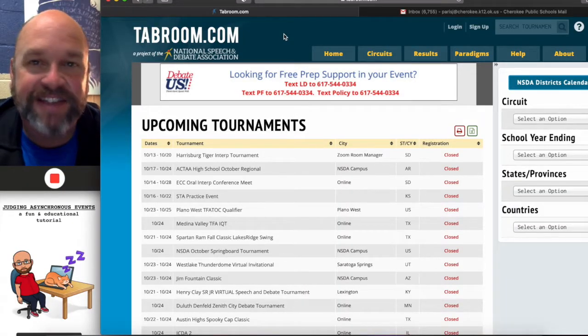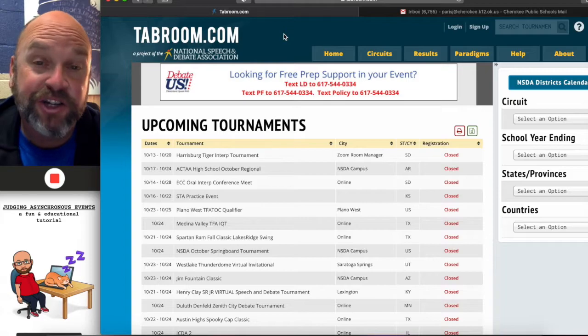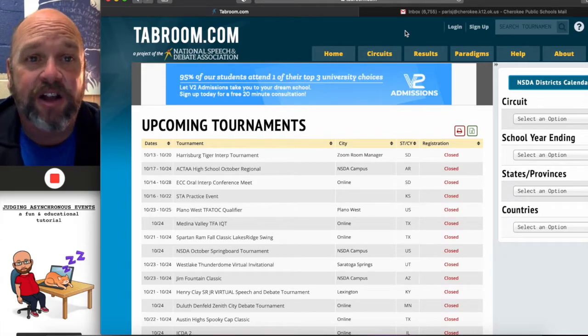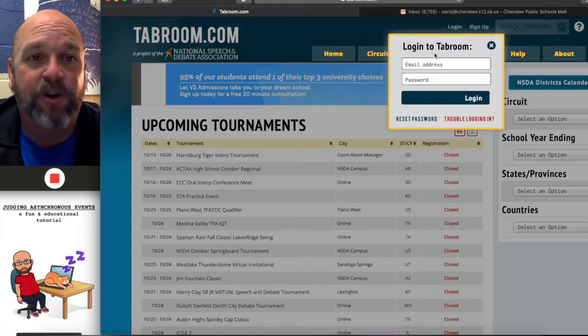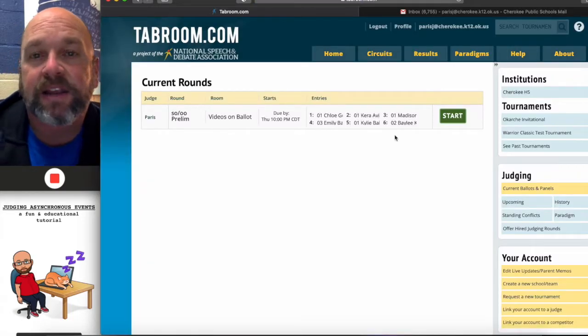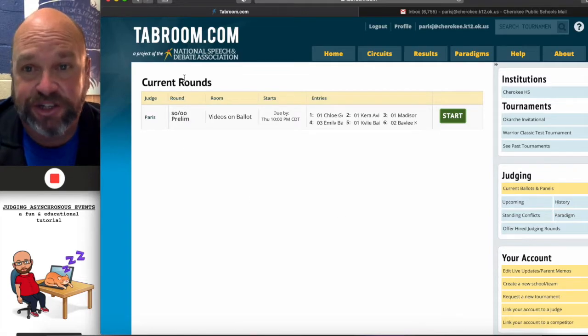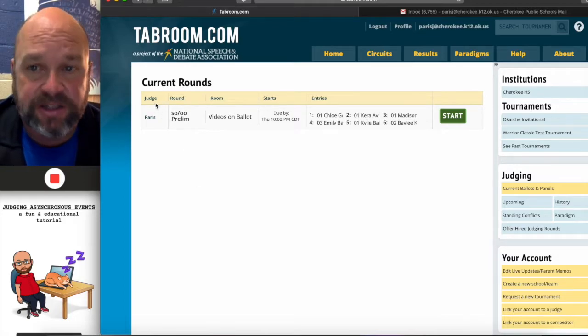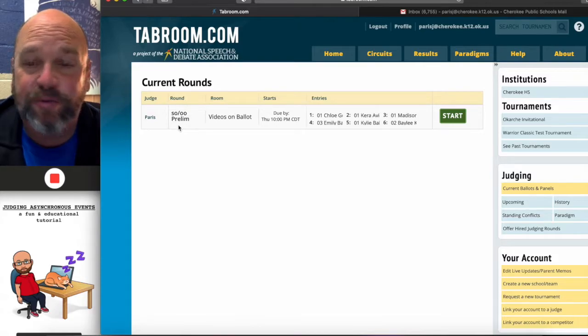I got my notification via text and email that I have a round to judge on tabroom.com. I can do it at my convenience, and it's convenient now. So, I've gone to tabroom.com. As always, I'm going to log in. And then, immediately, it takes me to the page that I need to see, which is current rounds.